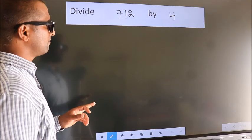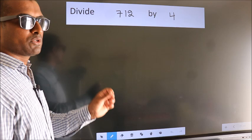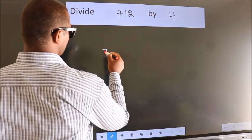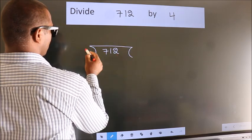Divide 712 by 4. To do this division, we should frame it in this way: 712 here, 4 here.